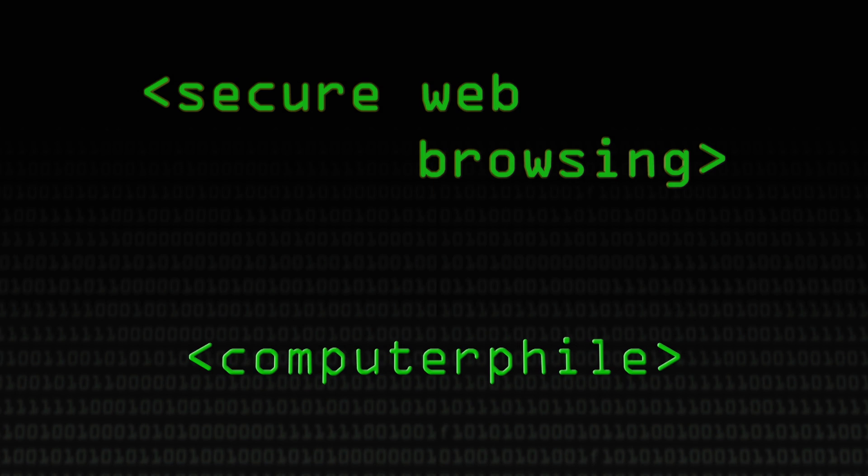The problem with a lot of the original protocols used for the web is that they're completely insecure. They're neither confidential — all the data you're transferring can be seen and observed by anybody who happens to be able to sit in the network — and they're completely unauthenticated. Even if you encrypt all the data so nobody can tell what it is as it's being transmitted and received, you might not have any idea that you're sending it to the right person or receiving it from the right person.